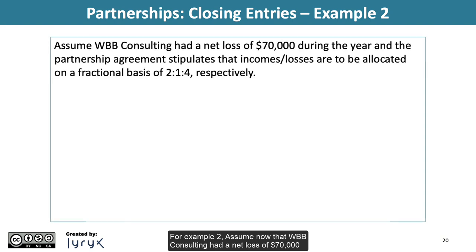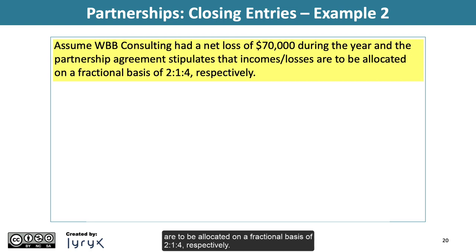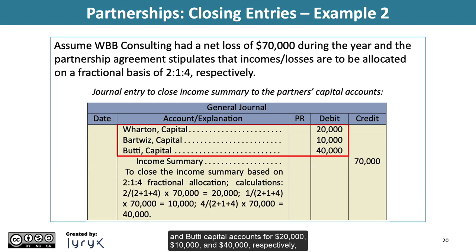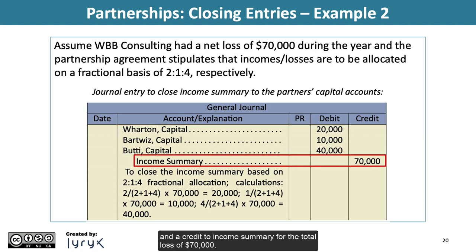For Example 2, assume WBB Consulting had a net loss of $70,000 during the year and the partnership agreement stipulates that incomes and losses are to be allocated on a fractional basis of 2, 1, 4, respectively. The journal entry to close the income summary to the partners' capital accounts would include debits to the Wharton, Bartwiz, and Beauty capital accounts for $20,000, $10,000, and $40,000, respectively, and a credit to income summary for the total loss of $70,000.